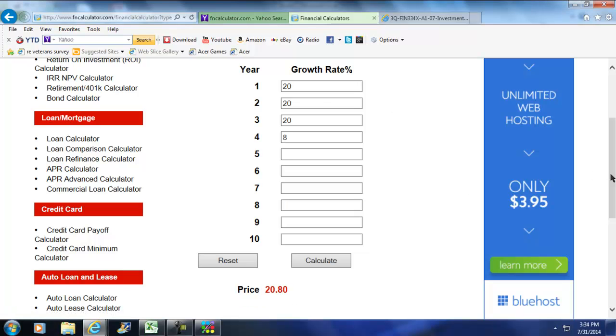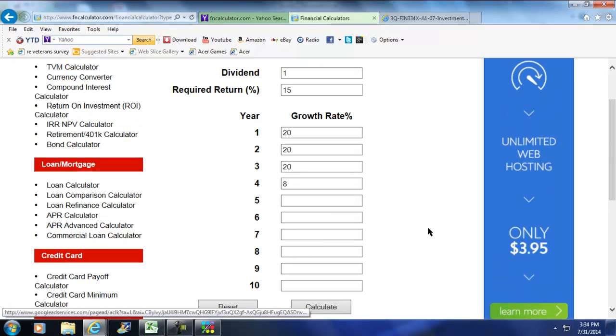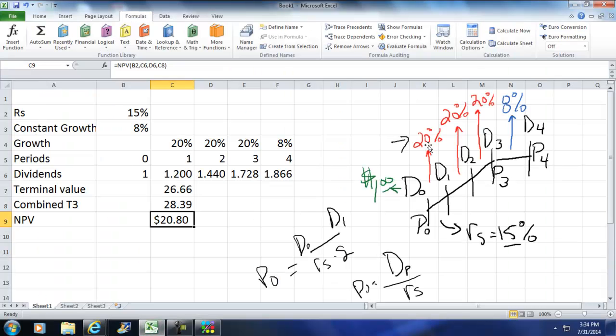The calculator makes it really easy, because what the calculator is doing is what I just did with the Excel spreadsheet. The calculator is just going, well, let me go ahead and apply the growth to that initial dividend, then let me find the terminal value and add these two together, and then simply find the net present value of those cash flows discounted back at 15%. I hope this helps a little bit with the non-constant cash flow for this week.